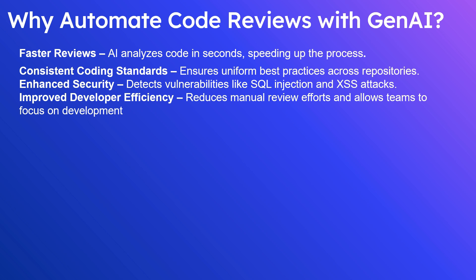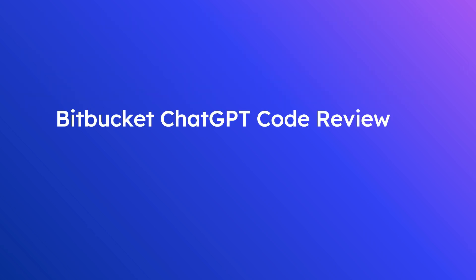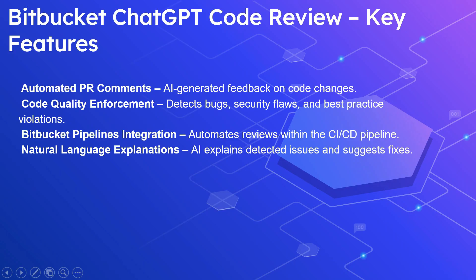There are multiple ways to automate code reviews. In this video we will explore two approaches. The first one is the Bitbucket ChatGPT Code Review plugin, which integrates OpenAI's GPT models into the Bitbucket PR workflow to analyze code changes and provide AI-driven feedback before merging the code.